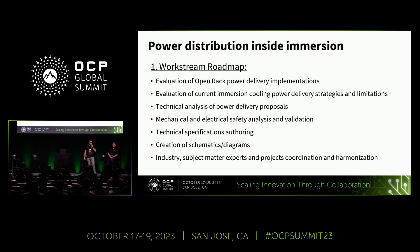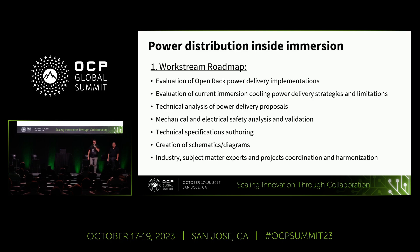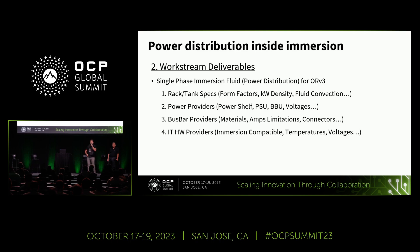In this workstream we typically speak about power implementations, immersion cooling strategies, and limitations we can find when speaking of different fluids, power delivery proposals, safety, and mechanical adaptations. As you may know and will see here, it's very different to stack things vertically on an air rack rather than horizontally in an immersion rack. There are a lot of adaptations to consider. We also create schemas and diagrams, speak with the community, and come up with different ideas and solutions. At the moment we separate the group into four towers, or four principles.